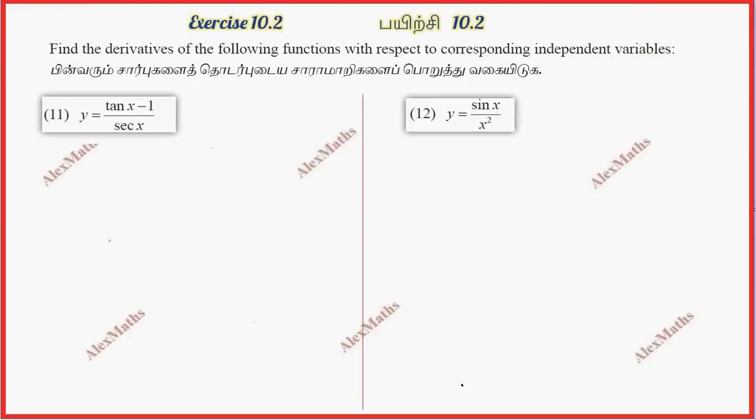Hi students, this is Alex here. Exercise 10.2, question number 11. This is u by v method, the quotient rule formula. dy by dx is equal to v u dash minus u v dash whole divided by v square.